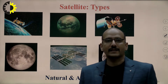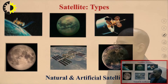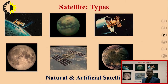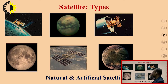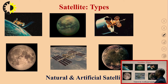In this lecture, we are basically concentrating on the types of satellites on various aspects and various bases. As you can see in this picture, there are some images showing various kinds of satellites, in which you can see that some are artificial satellites and some are natural satellites.